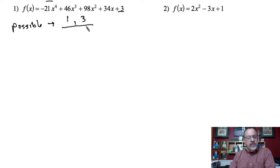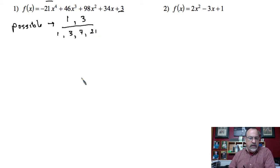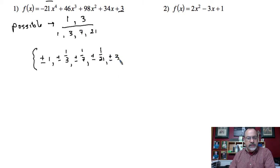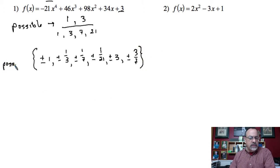To state the possible rational zeros for example one, I take the factors of the constant, which is 3 — so 1 and 3 — over the factors of 21, which are 1, 3, 7, and 21. Making my list: plus or minus 1, plus or minus 1 third, plus or minus 1 seventh, plus or minus 1 over 21, plus or minus 3, plus or minus 3 sevenths. The 3 over 3 reduces to 1 and 3 over 21 reduces to 1 seventh, both of which I already have. This is my list of all possible rational zeros.